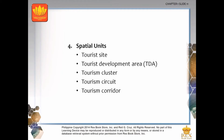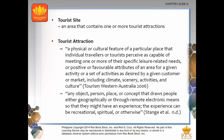Spatial units include tourist site, tourist development area, tourism cluster, tourism circuit and tourism corridor. A tourist site is an area that contains one or more tourist attractions. An example is Barangay Apocon of Tagum City, which has two attractions: the E-Park or Energy Park and the new City Hall of Tagum. A tourist attraction is defined as a physical or cultural feature of a particular place that individual travelers or tourists perceive as capable of meeting one or more of their specific leisure-related needs.